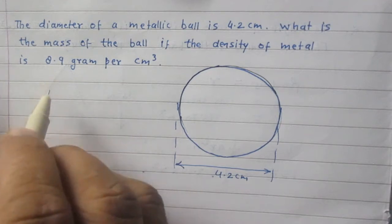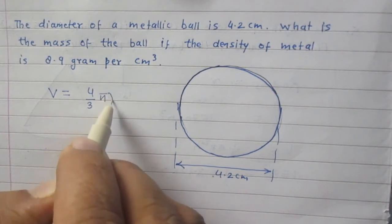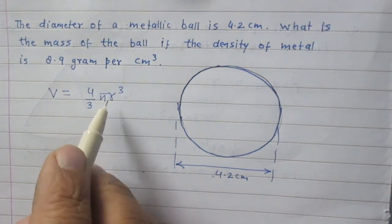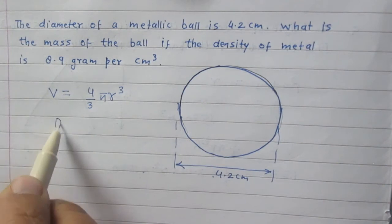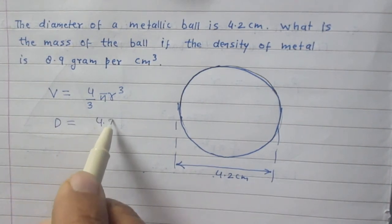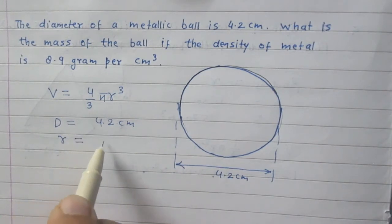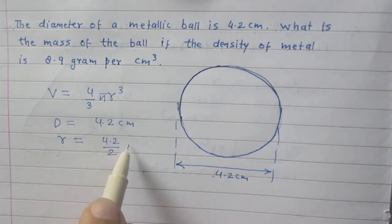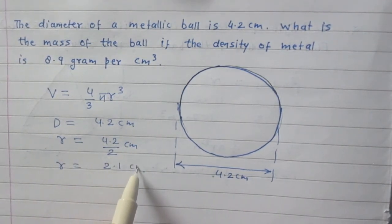So volume of a sphere is 4 by 3 pi r cube where r is for radius of the sphere. We are given that diameter of the ball is 4.2 cm. Radius of this ball will be just half of the diameter. 4.2 divided by 2 cm. So radius is 2.1 cm.